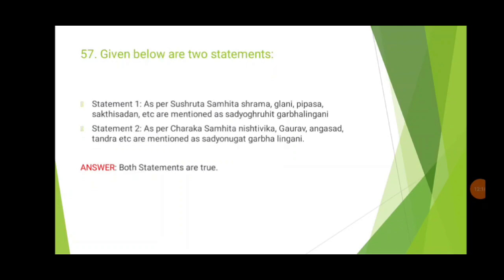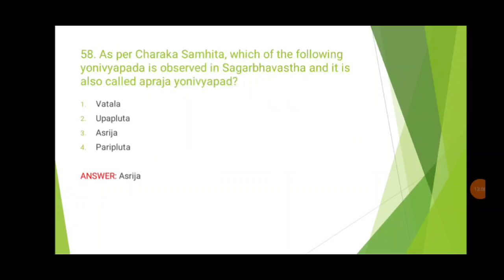The 57th question: Statement one — as per Sushruta Samhita, shrama, glani, pipasa, shakti sadana etc. are mentioned as sadhiyo grihida garbha linga. Statement two — as per Charaka Samhita, nishtivika, gaurangasadha, tandra etc. are mentioned as sadhiyo nigata garbha linga. Both statements are true. Study vyakta garbha lingam, sadhiyo grihida garbha lingam, mridha garbha lakshana, and ridhu madhi lakshana carefully to avoid confusion. The 58th question: yoni vyapath observed in sagarbha avastha also called apraja is asrija — 'labda darbe abhi asrija' — seen in pregnant state.